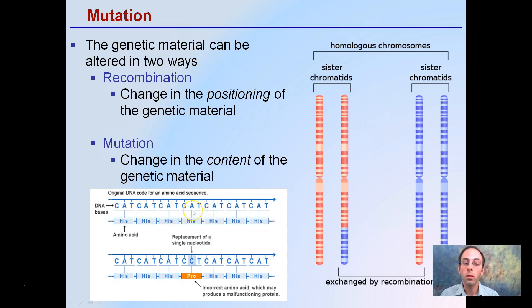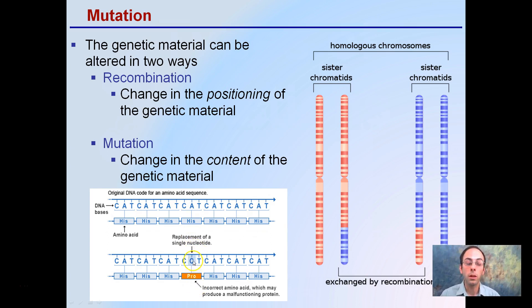The nucleotide sequences might be changed. Here we have a change from an A to a C — an adenine to a cytosine — and how that changes our amino acid, which can negatively impact a protein that might be made from there.